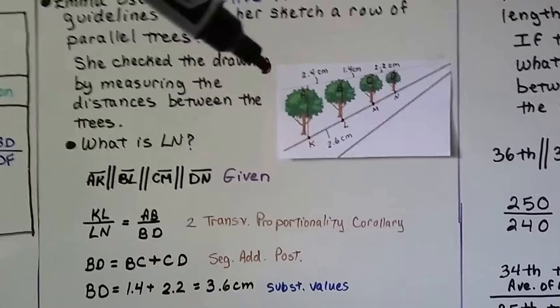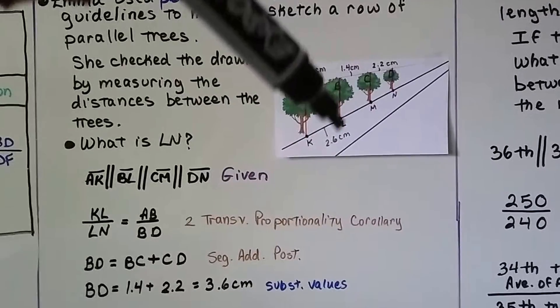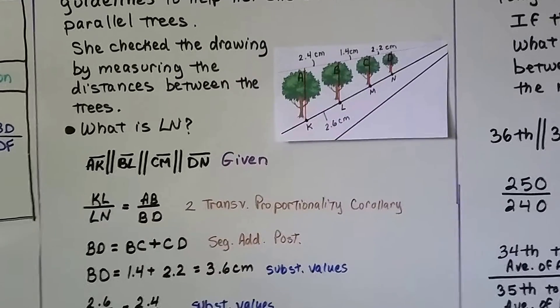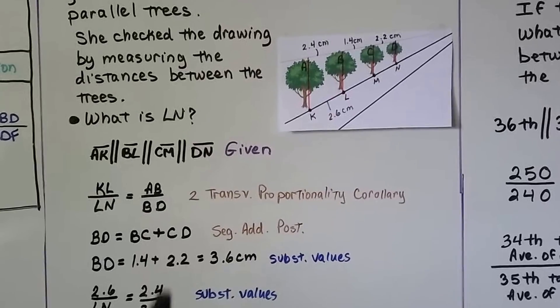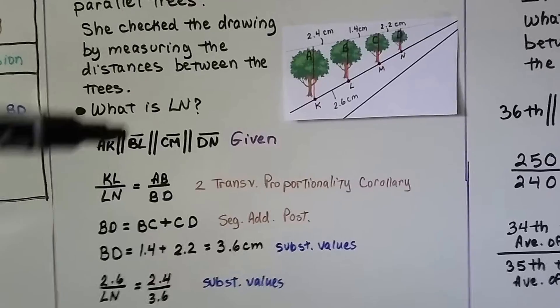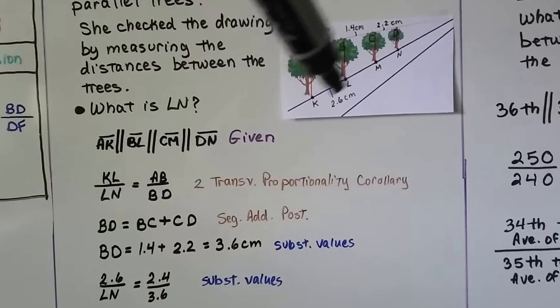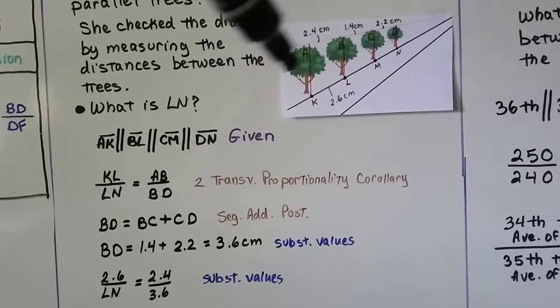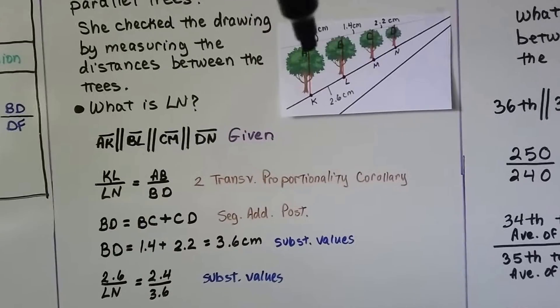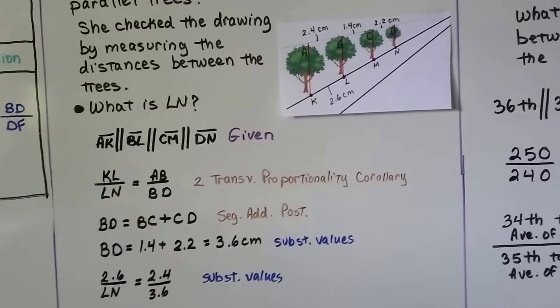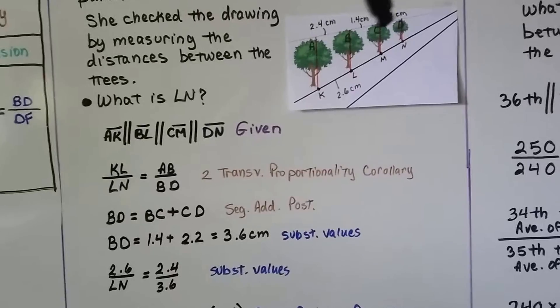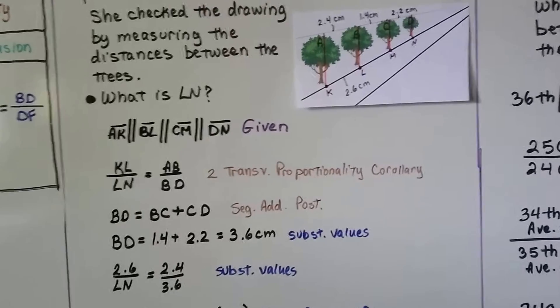So it's given that AK is parallel to BL, which is parallel to CM, which is parallel to DN. And using the two-transversal proportionality corollary, we can write that KL, this part right here, over LN, from L to N, is equal to AB, because it corresponds to this one, over BD, skipping this tree here, because that would correspond to here, the LN.